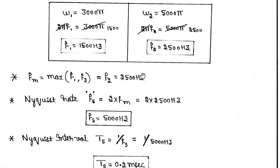In the next lecture, we will see a few more numericals based on sampling, representing G(f) and G_δ(f), and how to write the sampling equation for a given numerical. Based on that, we will move to natural sampling and flat-top sampling, and later we will see the sample-and-hold circuit. These are the concepts which will be covered in the upcoming videos.